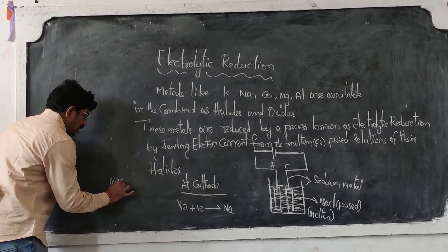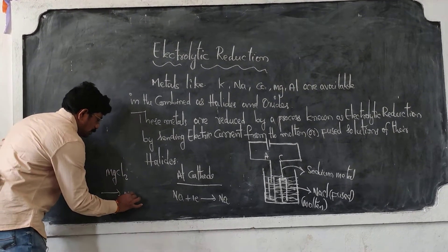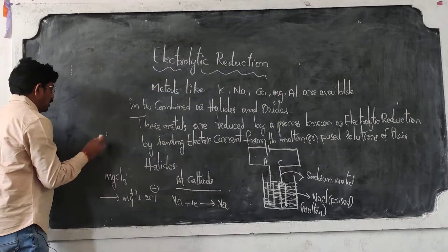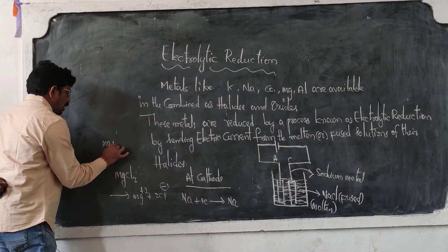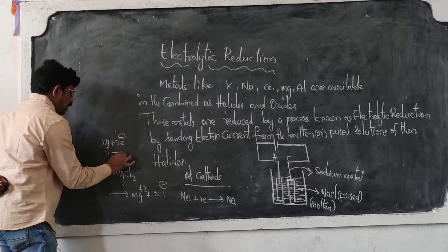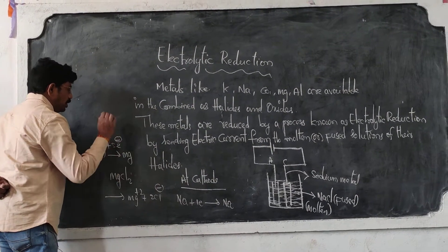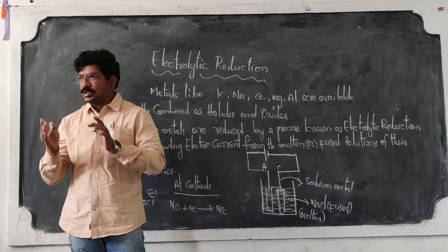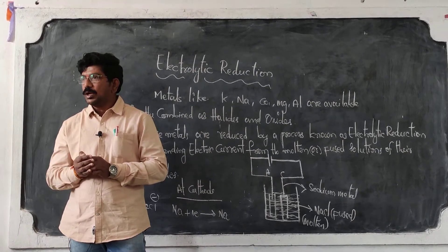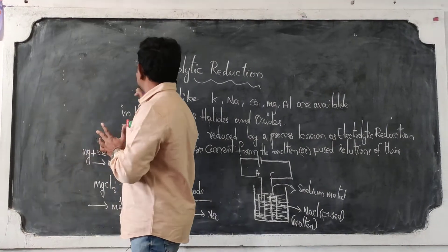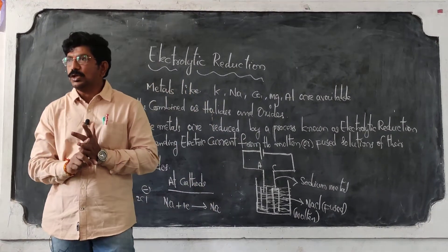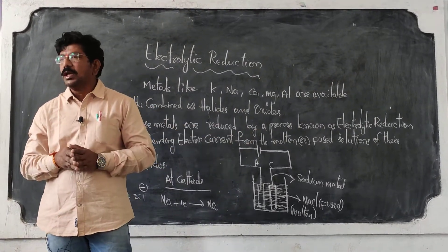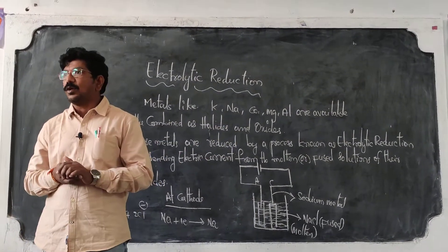In the same manner, if you take magnesium chloride, it decomposes to Mg²⁺ and 2 Cl⁻. At the cathode, magnesium receives two electrons and is deposited as pure magnesium metal. So metals high in the reactivity series are reduced to molten metals by the electrolysis of fused solutions — this is electrolytic reduction.